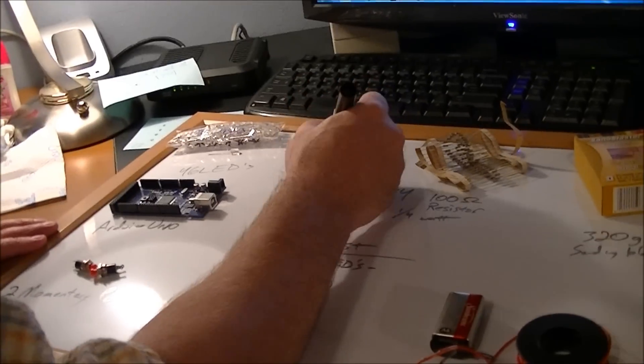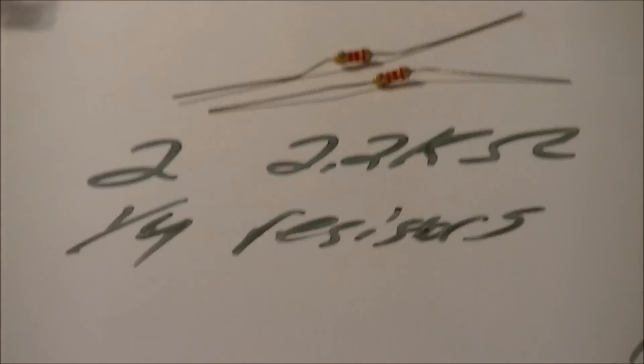So two of those. And then to go along with those, we're also going to have two 2.2 kilo-ohm quarter watt resistors. Those are the pull-up resistors for the switches.